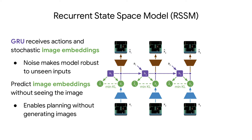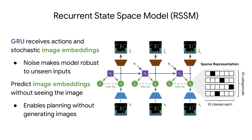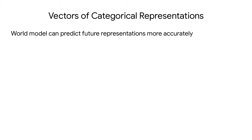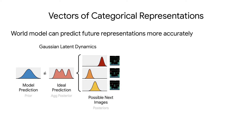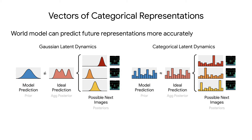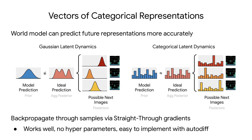DreamerV2 improves over RSSM using two techniques: vectors of categorical representations and KL balancing. The world model tries to predict its next image representations. Previous world models often use Gaussian representations, but because there are multiple possible next images, the ideal prediction would be a mixture of multiple Gaussians, which a Gaussian predictor is not flexible enough to learn. Categorical representations don't have this problem — a mixture of categorical image representations is again a categorical variable, and a categorical predictor can match that accurately. To backpropagate through the categorical representations, we use straight-through gradients. These work really well, have no hyperparameters, and are easy to implement using autodiff frameworks.